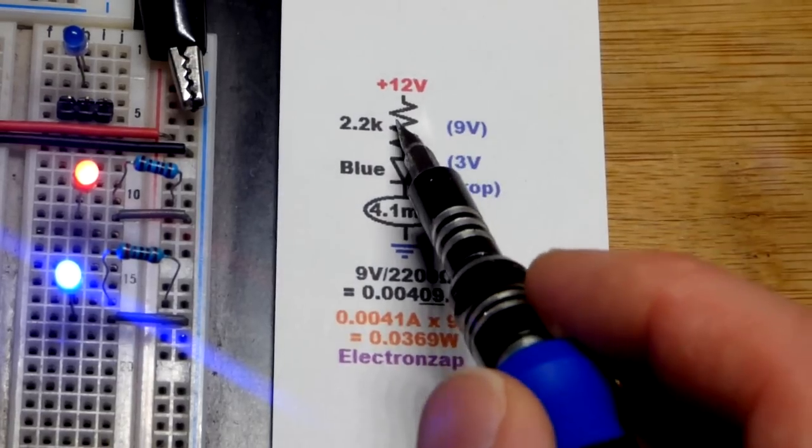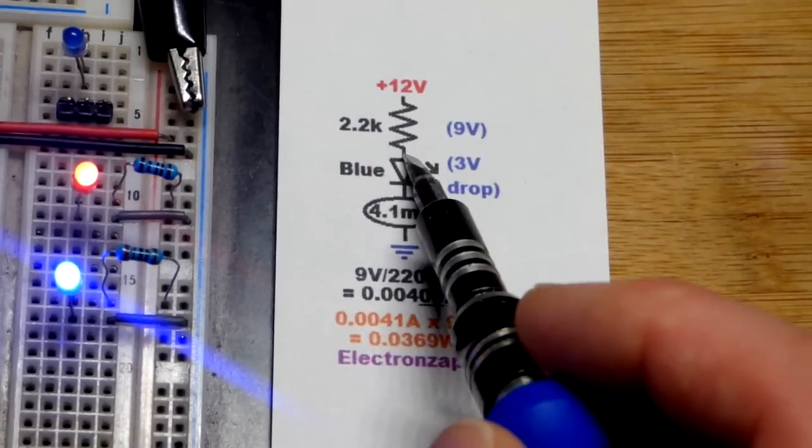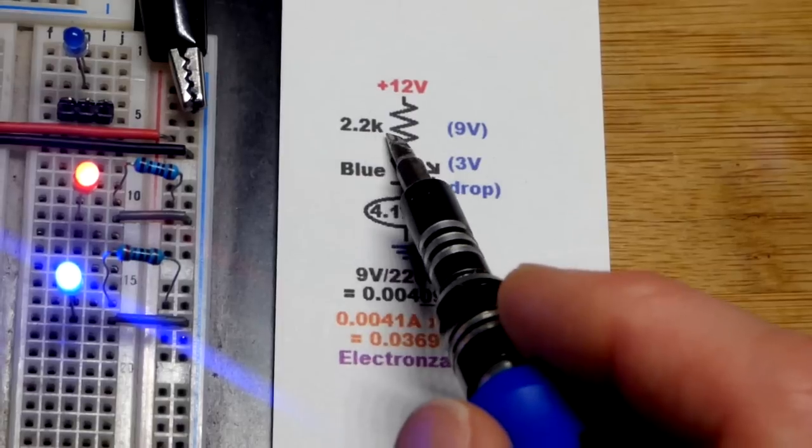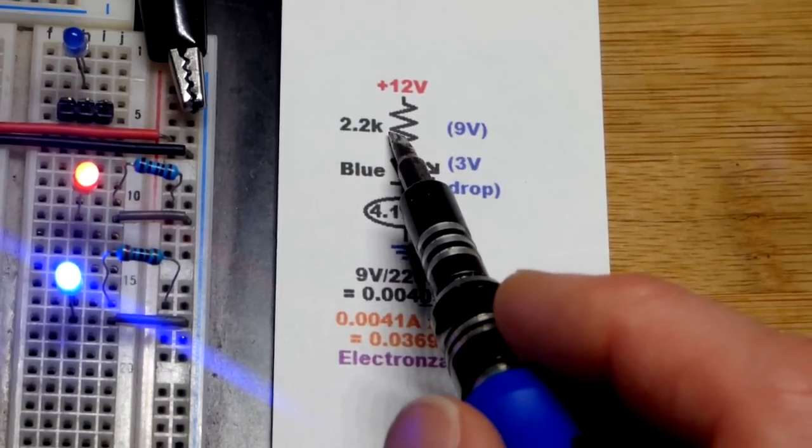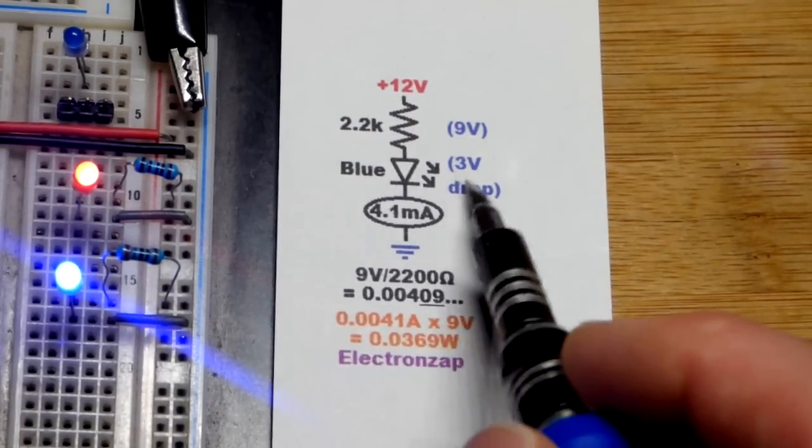Now, if we're going to use a resistor to limit current through a blue LED, when we have a 12-volt supply, make sure the anode's more positive, the cathode's more negative, then a 2,200 ohm resistor might work out well, and it might even want to go a little bit higher in value. But, in any case, blue LED's going to drop about 3 volts, leaving 9 volts across the 2,200 ohm resistor.